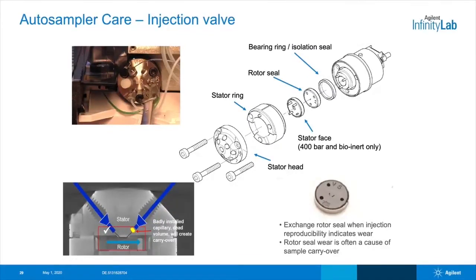Once the sample gets injected, it travels in through the needle seat, through the seat capillary, and into the injection valve. There are a number of capillary connections to this valve. A common part that needs replacing in the valve is the rotor seal. The sample comes in through one fitting and transfers through tiny grooves on the rotor seal and back out through the valve. Proper installation of the capillary fittings into this valve is essential to avoid dead volume. The rotor seal material is very robust, but those tiny grooves can wear out over 30 to 40,000 injections. When this part wears out, the sample doesn't transfer properly, and you could see broader peaks, carryover, and generally poor reproducibility.